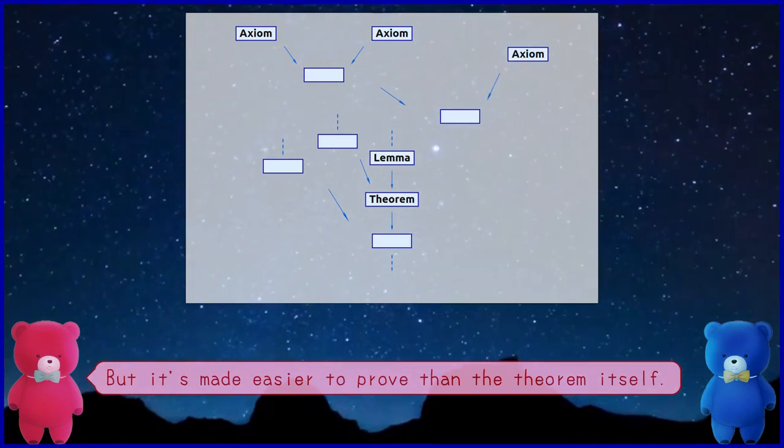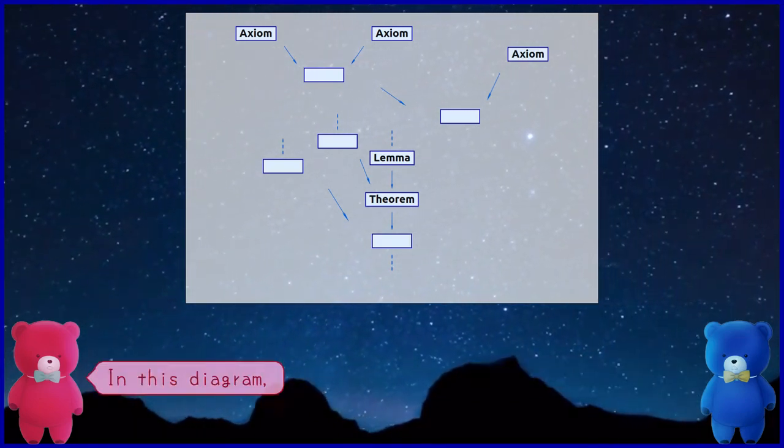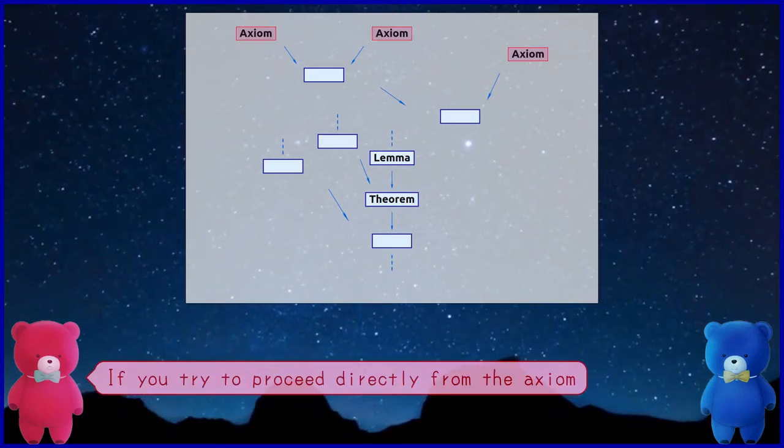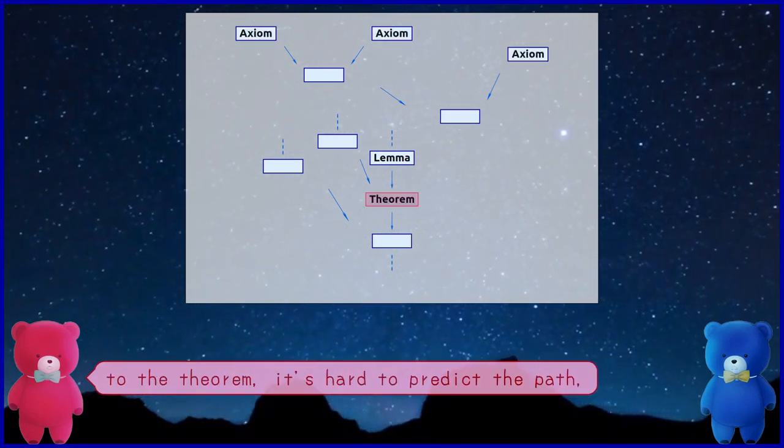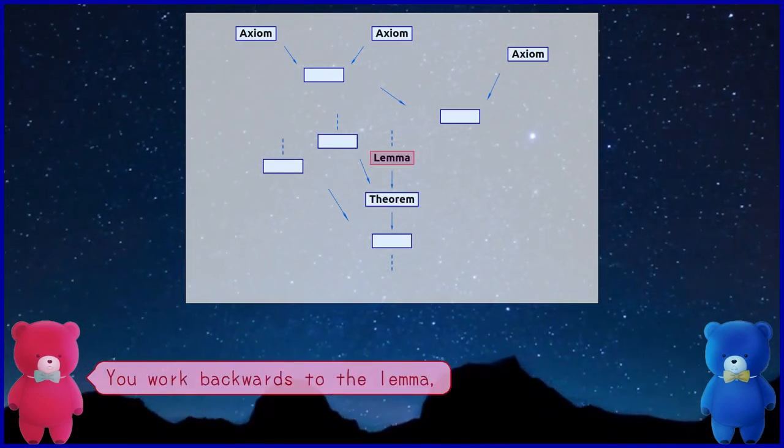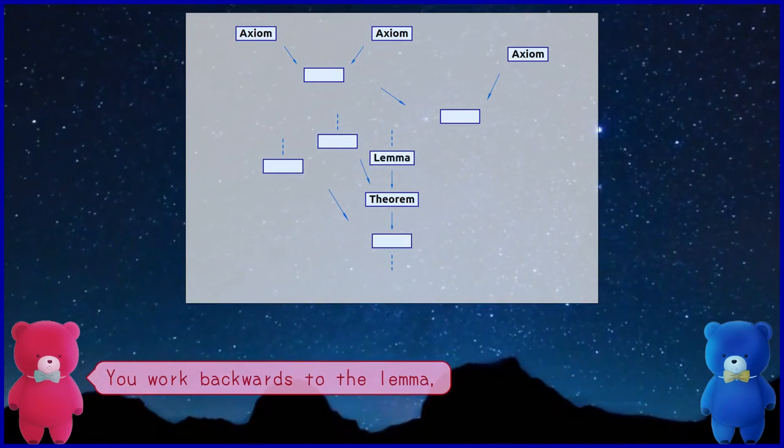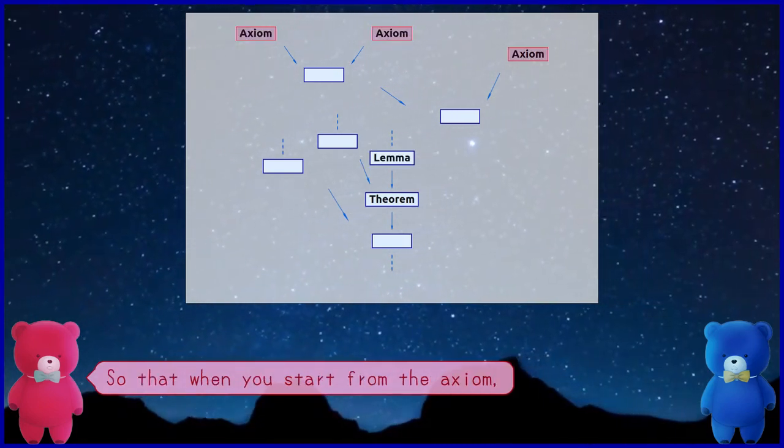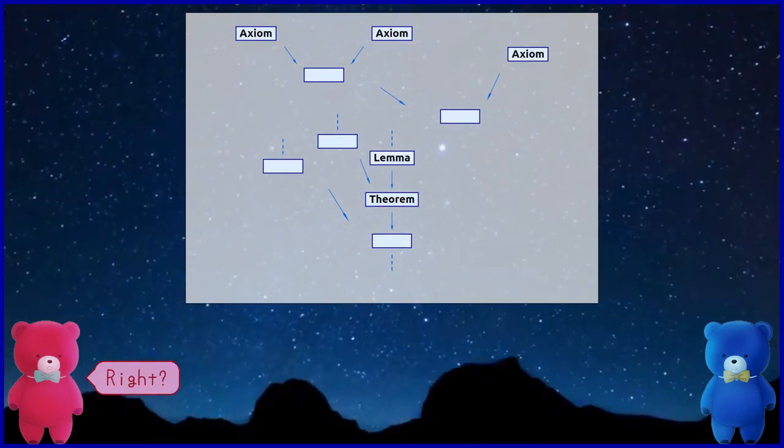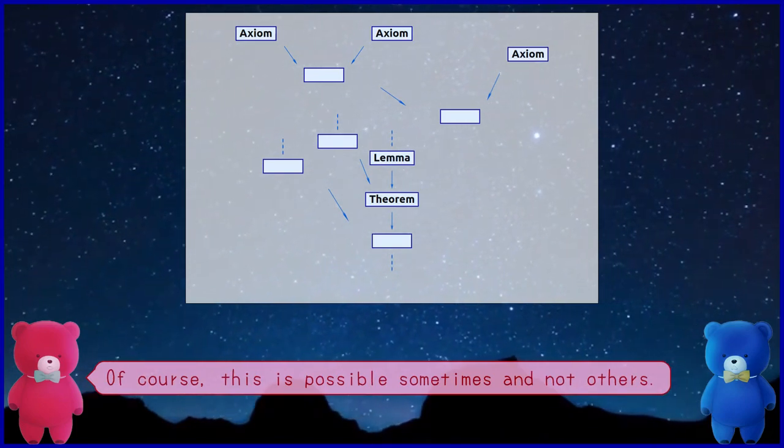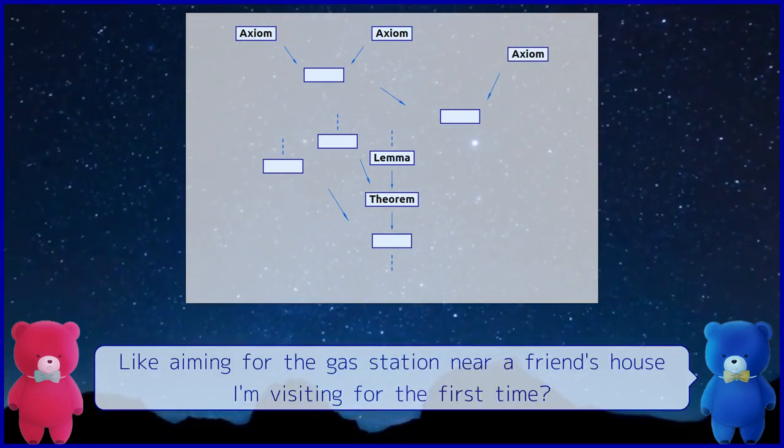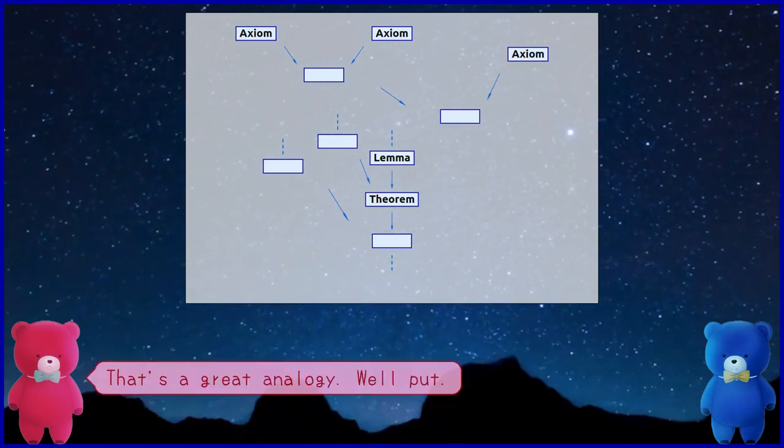After all, a lemma is, to put it extremely, a claim that feels almost like just a refreshing of the theorem, but it's made easier to prove than the theorem itself. What do you mean? In this diagram, if you try to proceed directly from the axiom to the theorem, it's hard to predict the path. So from the theorem, you work backwards to the lemma, so that when you start from the axiom, it's easier to get there.